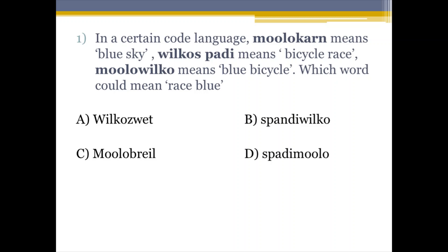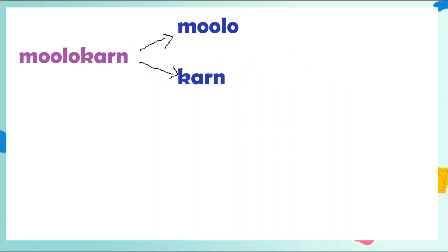It's very simple. What we have to do here is bifurcate every word into two parts. The first word is Molokarn, so we will divide this into two parts — Molok and Kern — which means blue sky. So Molok means blue and Kern means sky.